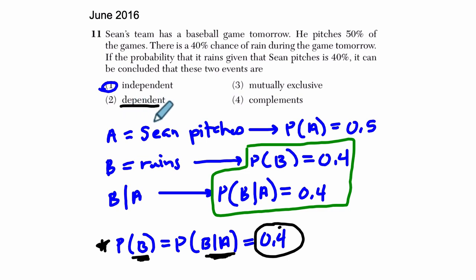Dependent, choice two, that would be if they were not equal. In other words, if Sean pitching lowered or raised the probability of it raining, if A had an impact on B where they depend on each other, they would be called dependent events.